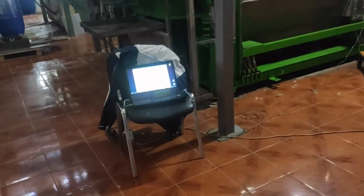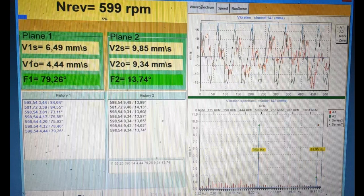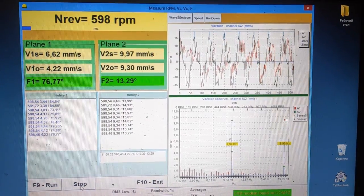Start the program. Measure initial vibration in the vibrometer mode for some time. Values are 4.44 mm/second and 9.34 mm/second. Vibration values and phase are stable.